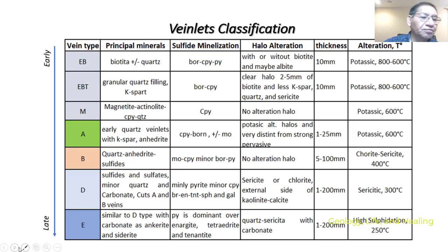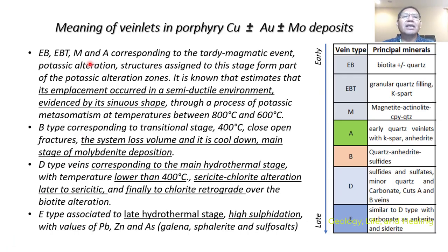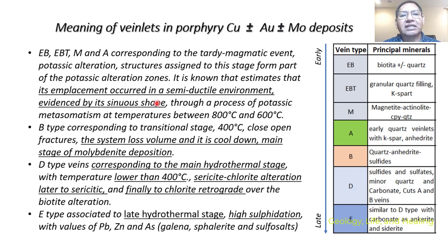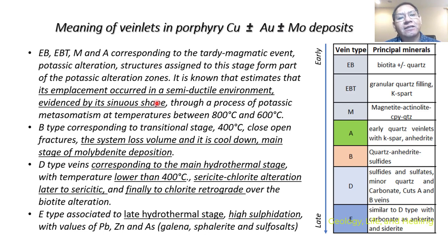Now the meaning of the veinlets in the porphyry copper-gold-molybdenum deposit. AV, AVT, M, and A correspond to the tardy magmatic event. Potassic alteration structures assigned to this stage form part of the potassic alteration zones. It's estimated that emplacement occurred in a semi-ductile environment — evidence being the sinuous or serpentine shape of the quartz veinlets. That's why they think it's a semi-ductile environment, through a process of potassic metasomatism at temperatures between 800 and 600 degrees Celsius.